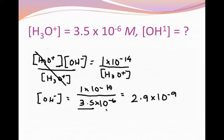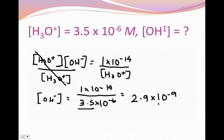Here's an example of how we use this knowledge to find an unknown concentration. If I know the hydronium ion has a concentration of 3.5×10⁻⁶, and Kw is 1×10⁻¹⁴, I can rearrange the equation [H₃O⁺][OH⁻] = Kw. Dividing both sides by the hydronium ion concentration, I get the hydroxide ion concentration: 1×10⁻¹⁴ divided by 3.5×10⁻⁶ equals 2.9×10⁻⁹.